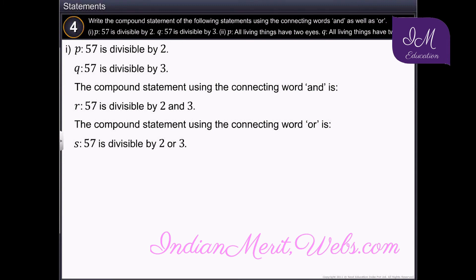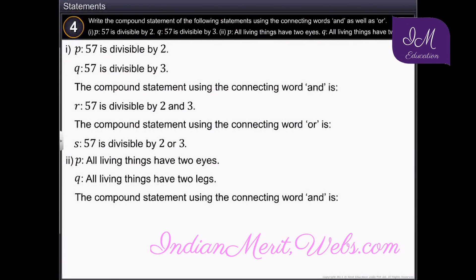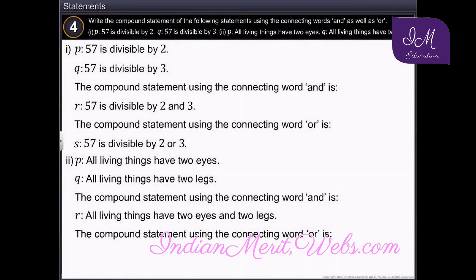The given statements are: all living things have 2 eyes, and all living things have 2 legs. The compound statement using the connecting word 'and' is: all living things have 2 eyes and 2 legs. The compound statement using the connecting word 'or' is: all living things have 2 eyes or 2 legs.